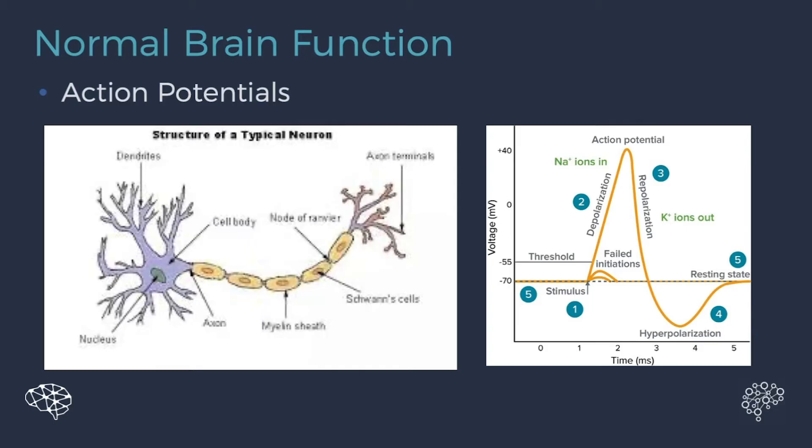As a signal comes in, if the signal is strong enough, it'll increase the voltage inside the neuron. If it hits negative 55 millivolts, that neuron will fire and pass that signal on.